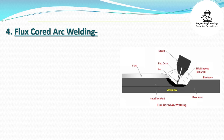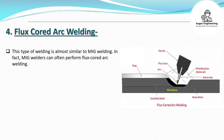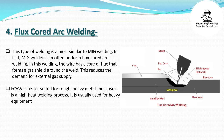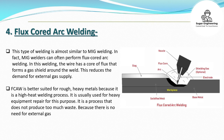4. Flux-Cord Arc Welding. This type of welding is almost similar to MIG welding. In fact, MIG welders can often perform flux-cord arc welding. In this welding, the wire has a core of flux that forms a gas shield around the weld, reducing the demand for external gas supply. FCAW is better suited for rough, heavy metals because it is a high-heat welding process, usually used for heavy equipment repair. It does not produce too much waste, and because there is no need for external gas, it also costs less.